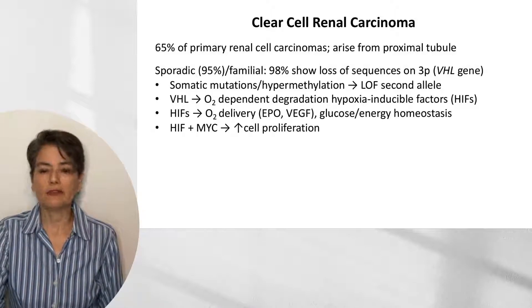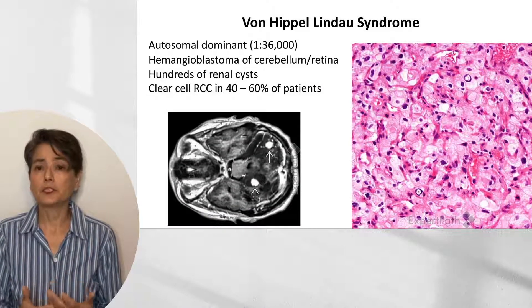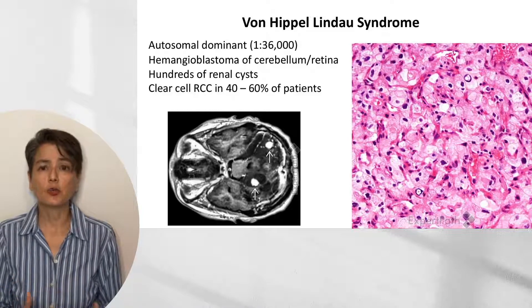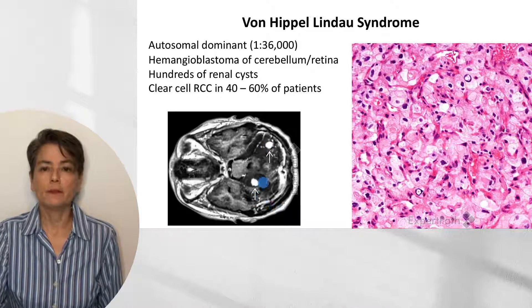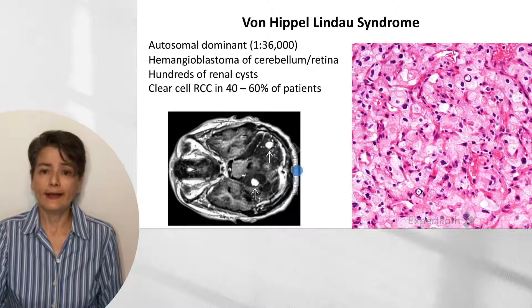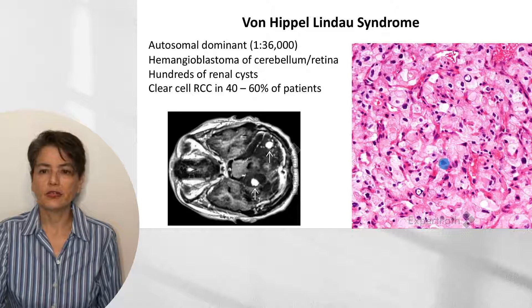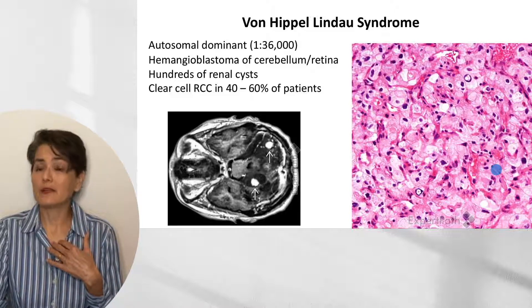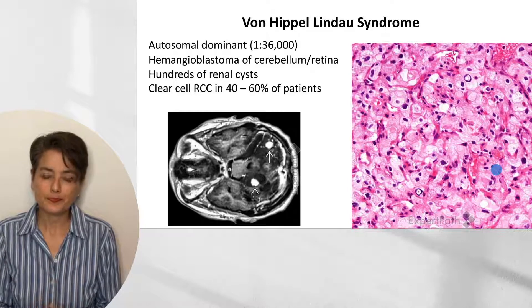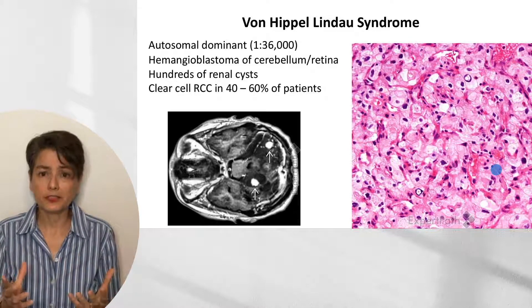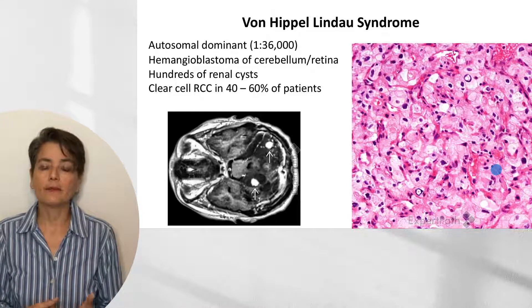Von Hippel-Lindau is an autosomal dominant syndrome found in about 1 in 36,000 individuals, characterized by hemangioblastomas of the cerebellum and retina — almost pathognomonic. Two hemangioblastomas in the cerebellum essentially says 'I have von Hippel-Lindau syndrome.' Histologically, hemangioblastomas show abundant lightly eosinophilic somewhat granular cytoplasm with finely branching capillaries, which is slightly reminiscent of clear cell renal cell carcinoma — reflecting shared pathogenesis. VHL syndrome also features hundreds of renal cysts, and clear cell RCC is identified in about 40–60% of patients.